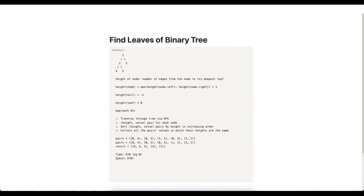This is great, but can we do better? The bottleneck is the O(n log n) sort step. If we can eliminate it, we can reduce time to O(n). Instead of collecting a list of height-value pairs to sort later, at each node once we know its height, we just insert that value into the result list directly.